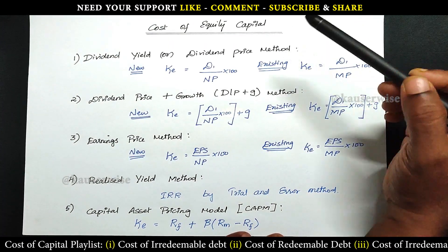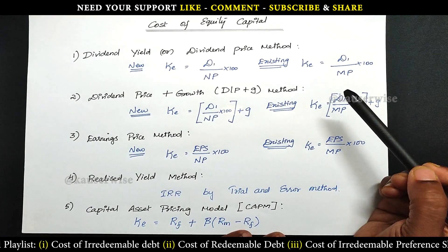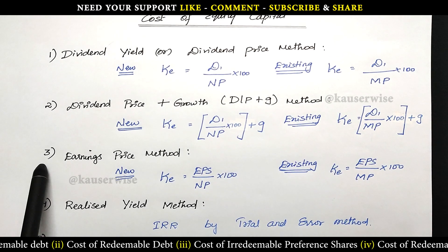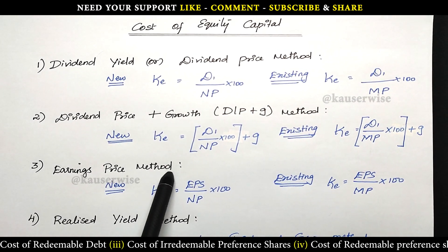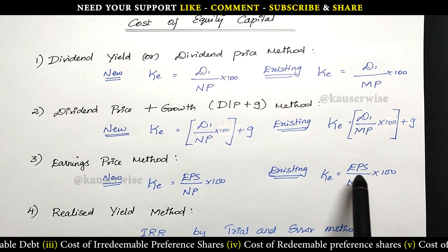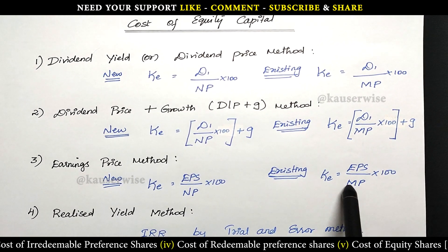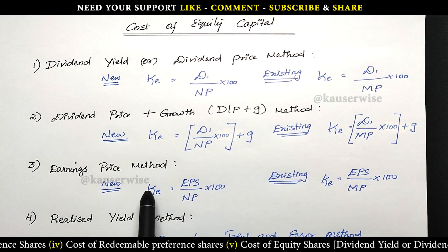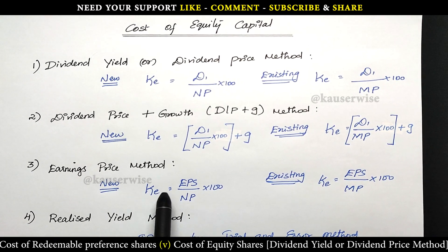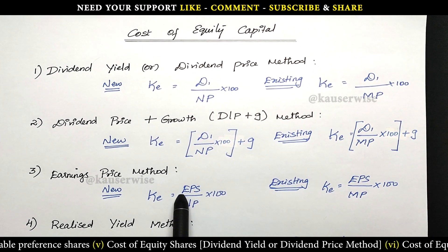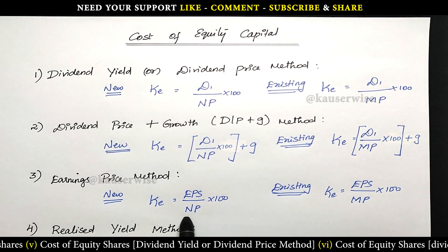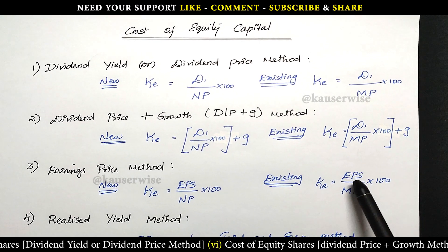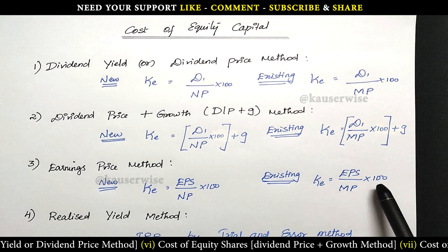Under cost of equity capital we have five different models. In the previous videos we have seen the first two different models. Now in this video we are going to see the third model, that is the earnings price method. According to this method, we have two different formulas — this one for new shares and this one for existing shares. KE, which refers to cost of equity, is equal to EPS (earnings per share) divided by net proceeds, into 100. For existing shares, cost of equity is equal to earnings per share divided by market price, into 100.